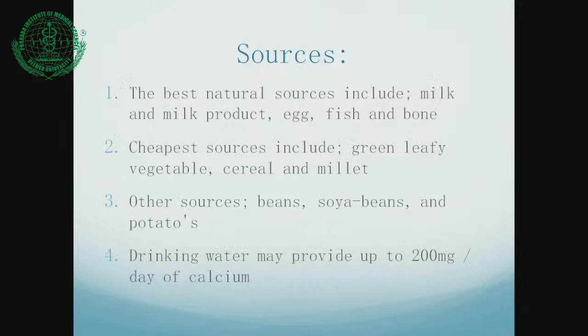From the physiological perspective, the important roles are: bone formation, blood clotting which requires calcium ions for binding of platelets, brain function as a neurotransmitter, in the heart it acts for myocardial contraction, and similarly for muscle contraction. The best sources of calcium are milk and milk products, egg, fish, and bone. The cheapest would be green leafy vegetables, cereals, and millets, though calcium is not very well absorbed from these sources.